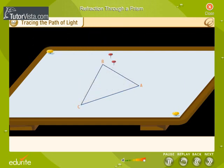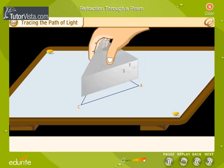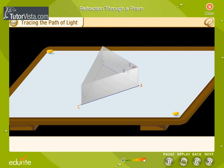Fix two pins T and S on one side. Place the prism on the boundary A, B, C. Looking through the other side, fix two more pins Q and R in such a way that all four pins appear to be in the same line.